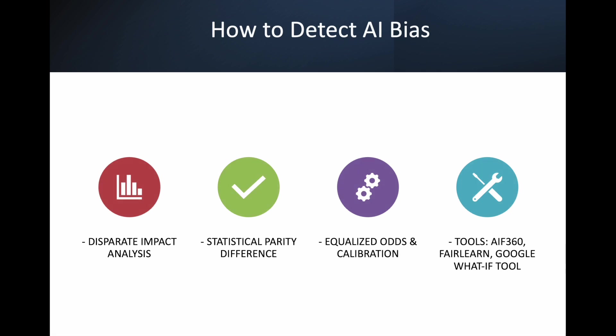How do we detect AI bias? For testers, the methods include disparate impact analysis — we need to do impact analysis first. Statistical parity difference — we need to find the statistics of partiality and see what actual difference we are getting. Equalized odds and calibration — sometimes certain outcomes happen inconsistently and we need to equalize that. Tools we can use include AI Fairness 360 (AIF360), FairLearn, Google What-If Tools, and others. There are many tools available to test the biasness of AI. I will create another video specifically for these tools.